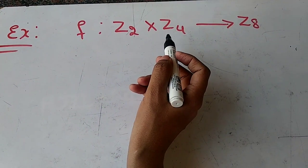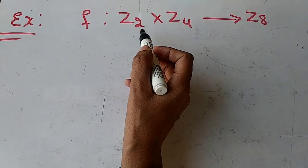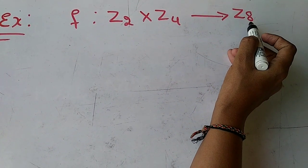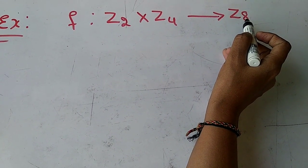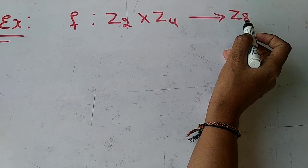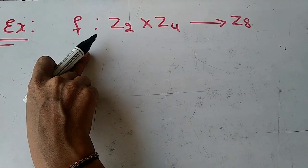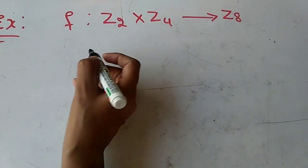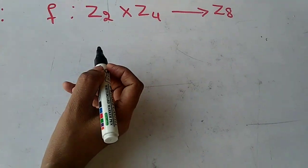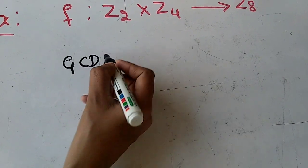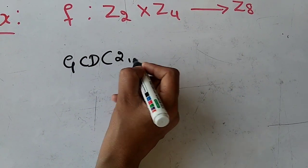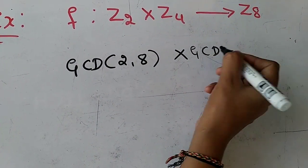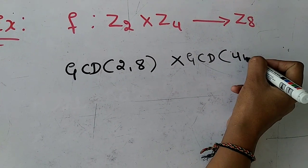Let's see an example. The function is in the form of type 3, where M1 is 2, M2 is 4, and N is 8. Applying the formula: GCD of 2 comma 8, multiplied by GCD of 4 comma 8.